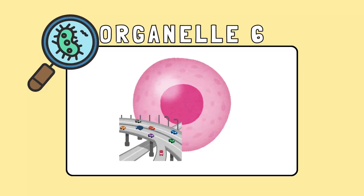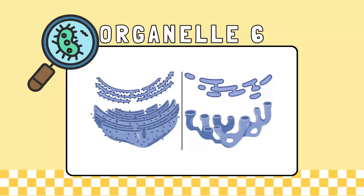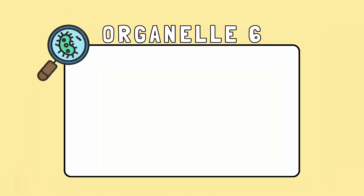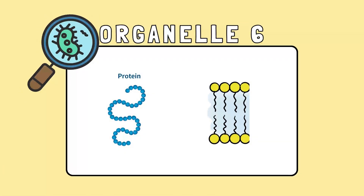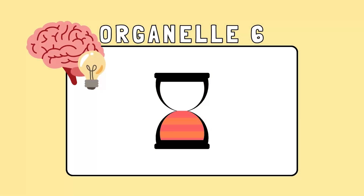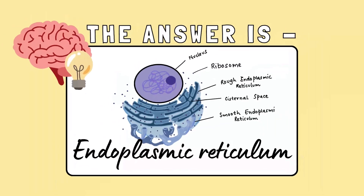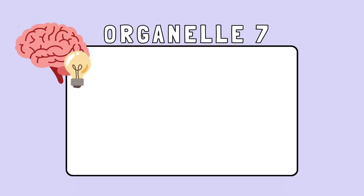This structure functions as the cell's transport system and exists in two forms: rough and smooth. The rough form helps make proteins, while the smooth form makes lipids. The answer is the endoplasmic reticulum — the cellular highway moving proteins and lipids where they need to go.